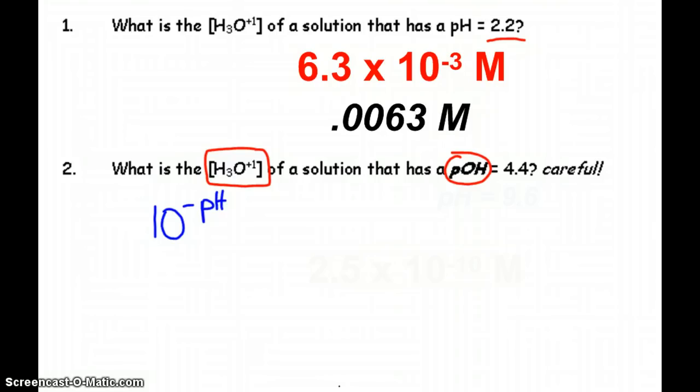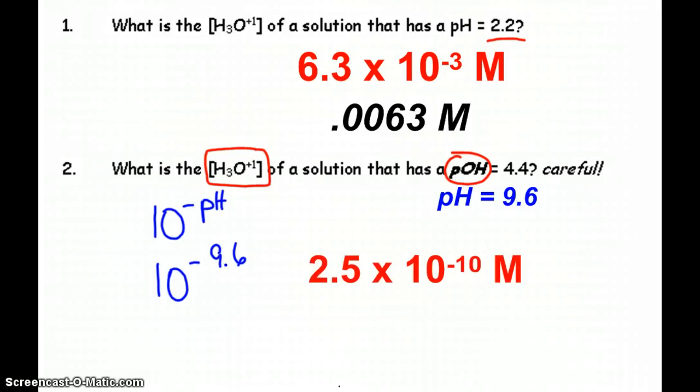So the concentration is 10 to the negative 9.6. And now we have to do the second log with your calculator, and you should get an answer of 2.5 times 10 to the negative 10th molar. And yes, you could write 2.5e negative 10. That's acceptable as well.